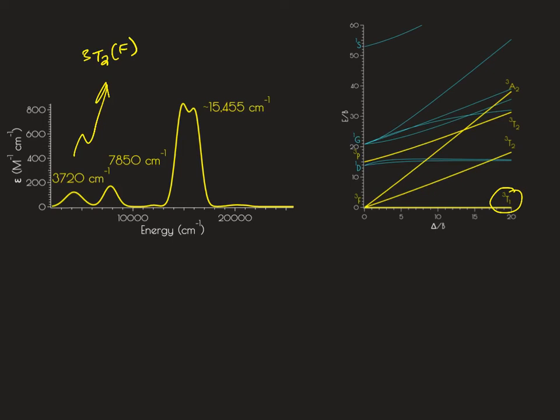The next energy transition goes into your triplet A2 state. And then this high energy intense transition is the triplet T1 term going into the triplet T2 originating from the P free ion term.